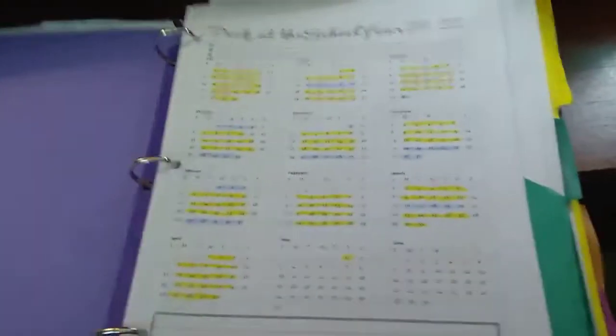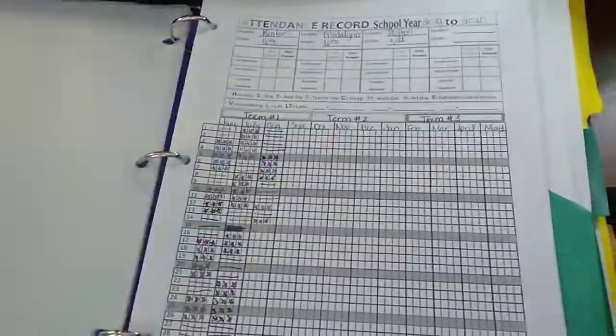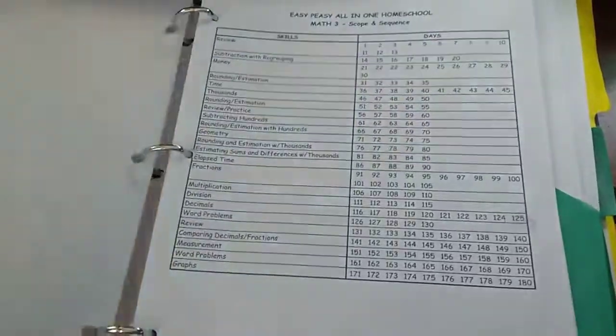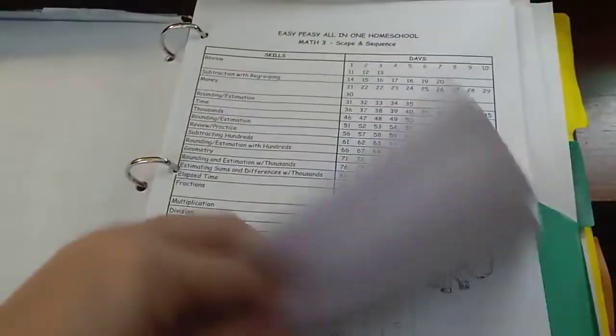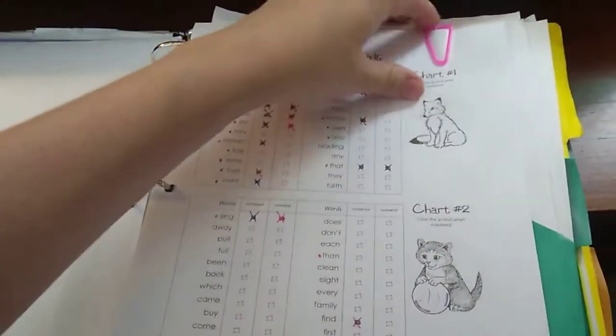For attendance, I have my year-at-a-glance attendance record. I have all of our scope and sequences up here, and then I keep our spelling words.